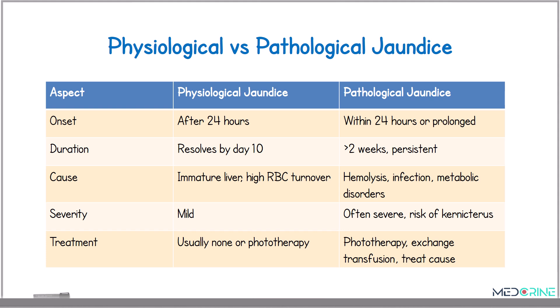In summary, physiological jaundice occurs after 24 hours, while pathological jaundice occurs within 24 hours or persists for more than 10 days. Physiological jaundice resolves by the 10th day, however pathological jaundice persists for more than two weeks. Physiological jaundice is caused by an immature liver and a high red blood cell turnover, while pathological jaundice has causes such as hemolysis, infections, or metabolic disorders. In terms of severity, physiological jaundice is mild compared to pathological jaundice, which is often severe and carries a higher risk of developing kernicterus.